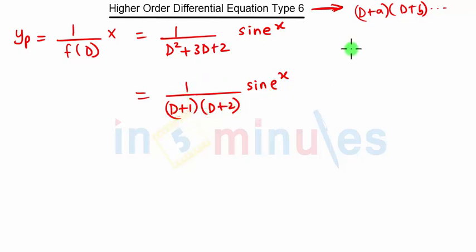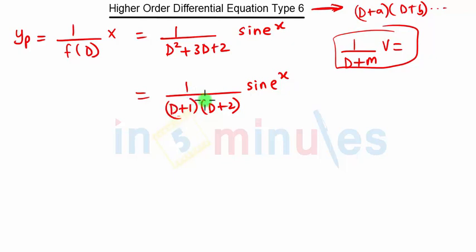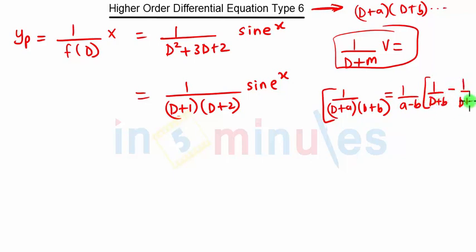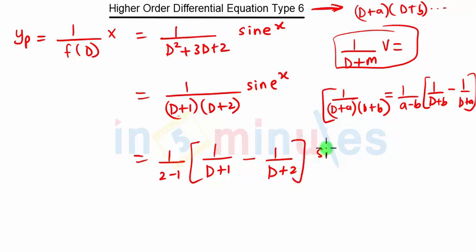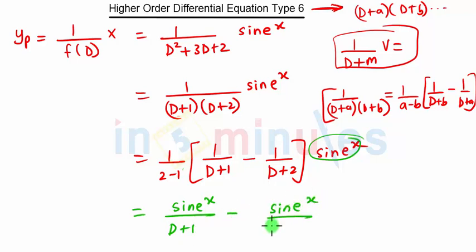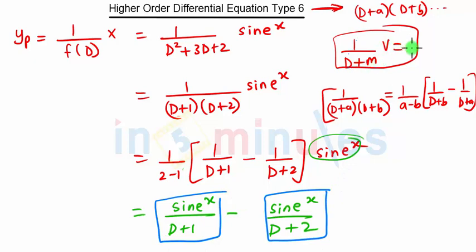We have 1/[(D+1)(D+2)] which is of the form (D+m)·v. We split using partial fractions: 1/[(D+a)(D+b)] = 1/(a−b) · [1/(D+b) − 1/(D+a)]. Applying this: 1/(2−1) · [1/(D+1) − 1/(D+2)] · sin(eˣ), which becomes sin(eˣ)/(D+1) − sin(eˣ)/(D+2). Each part is of the form 1/(D+m)·v, and the solution is e^(−mx) · ∫e^(mx) · v dx.